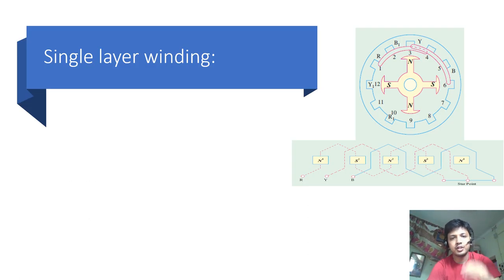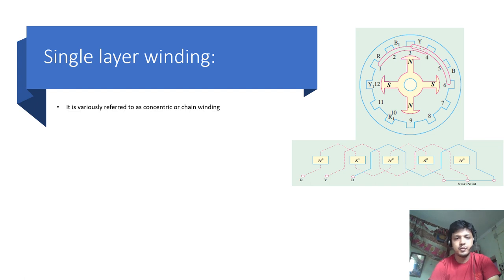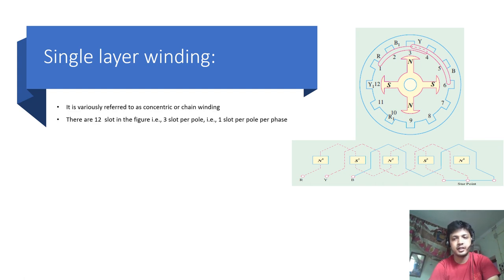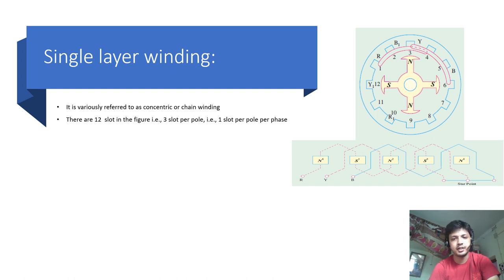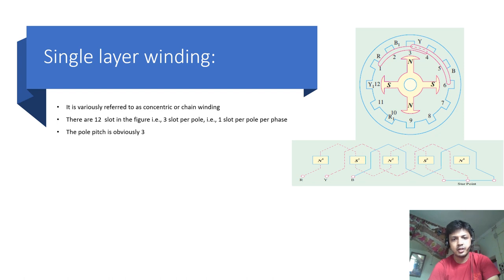Now we are going to discuss about single layer winding. It is variously referred to as concentric or chain winding. Let's take an example. There are 12 slots in the figure. As there are 4 poles, there are 3 slots per pole. With 4 poles and 3 phases, there is 1 slot per pole per phase. The pole pitch is the distance between 2 poles, that is 3 slots per pole.